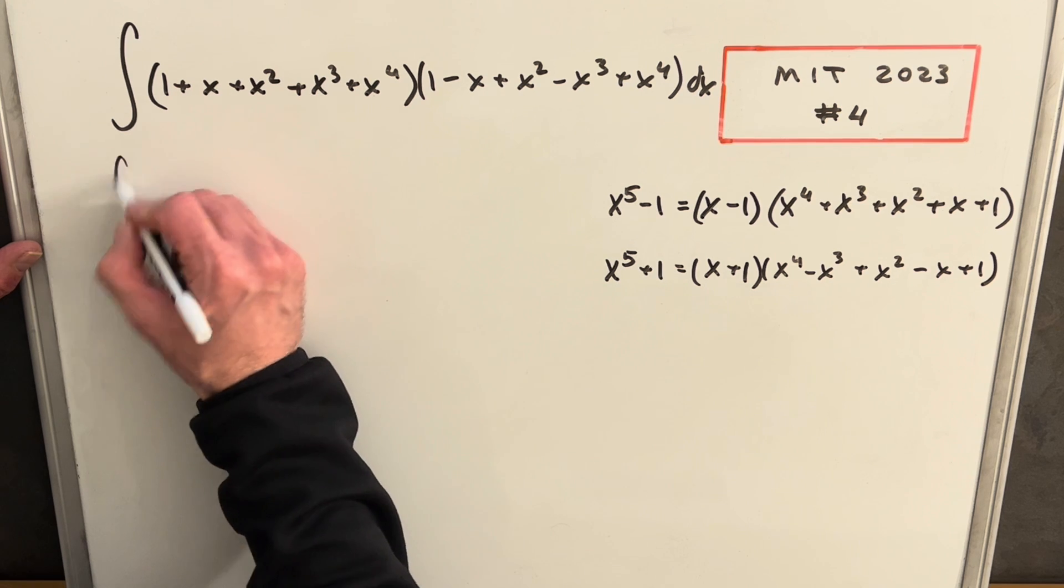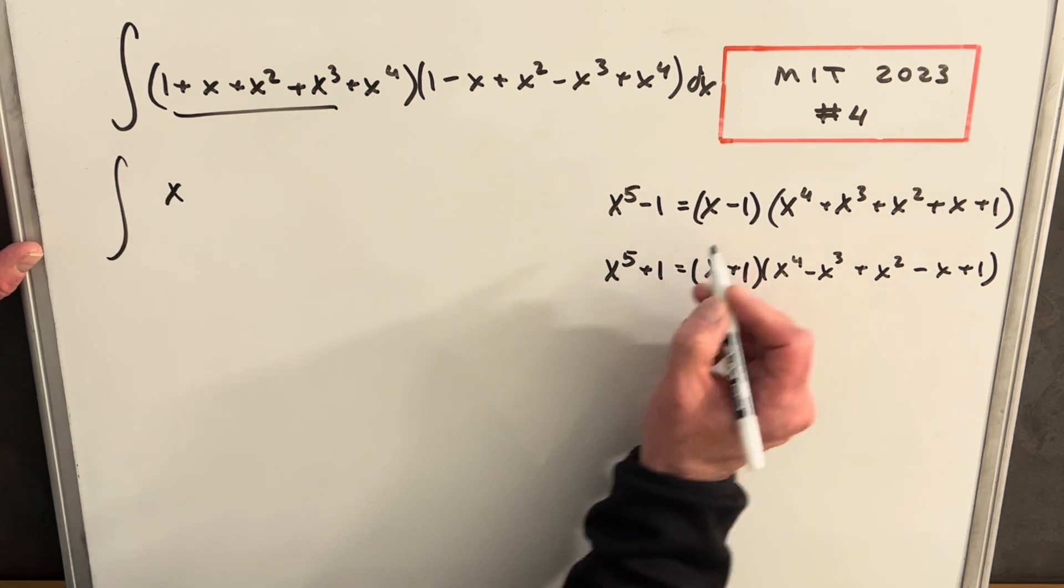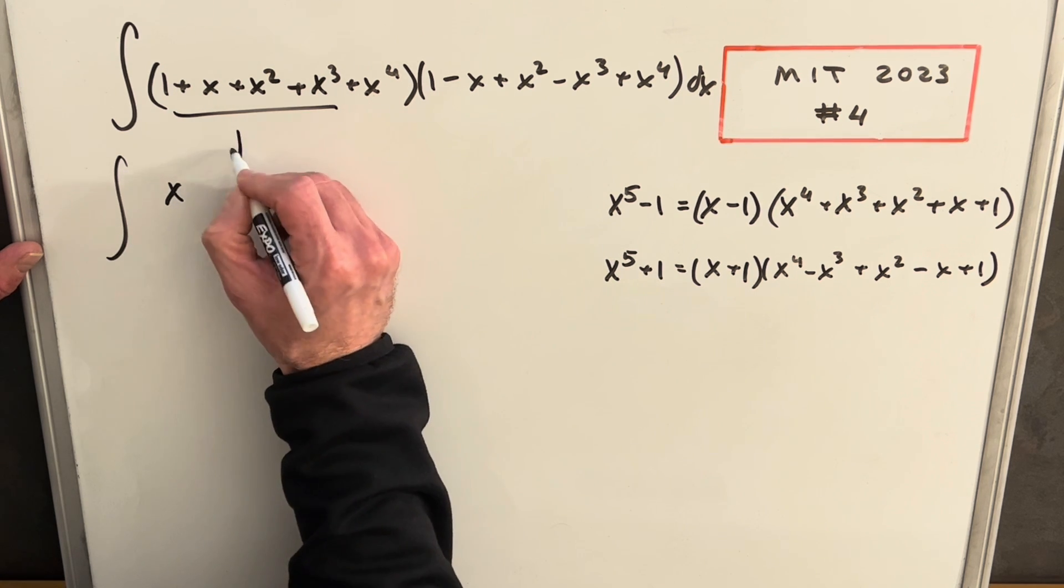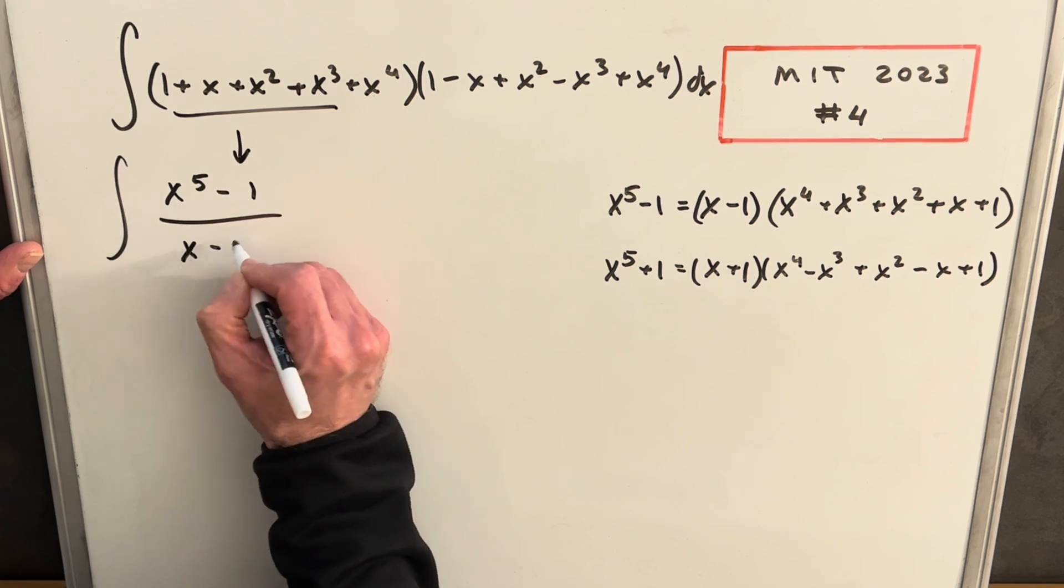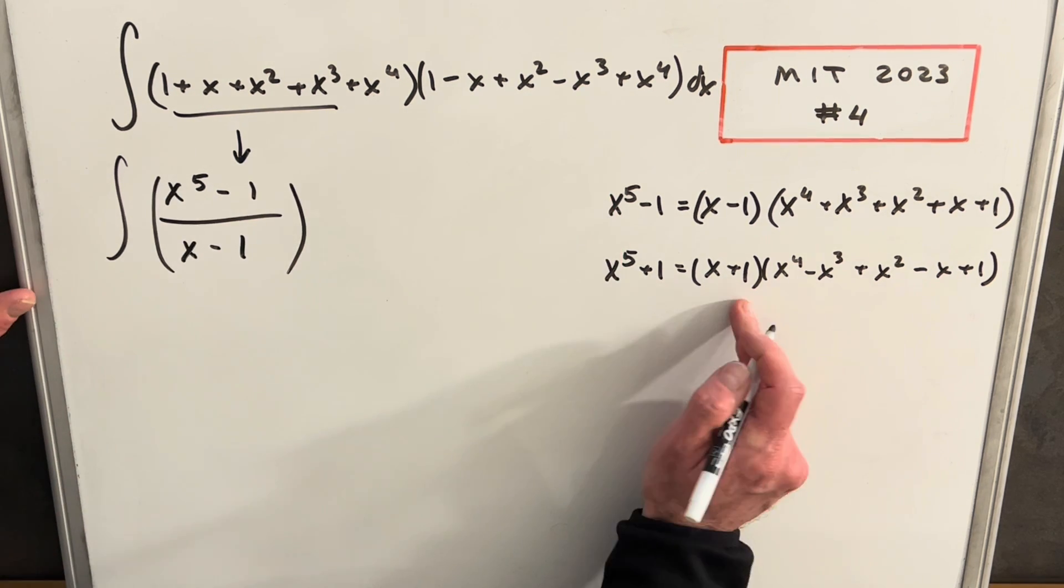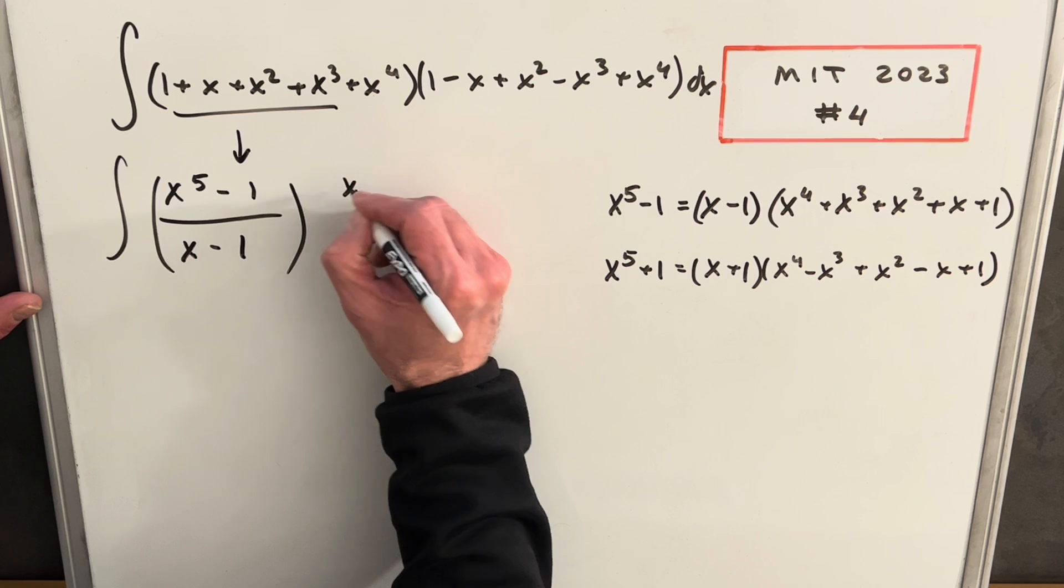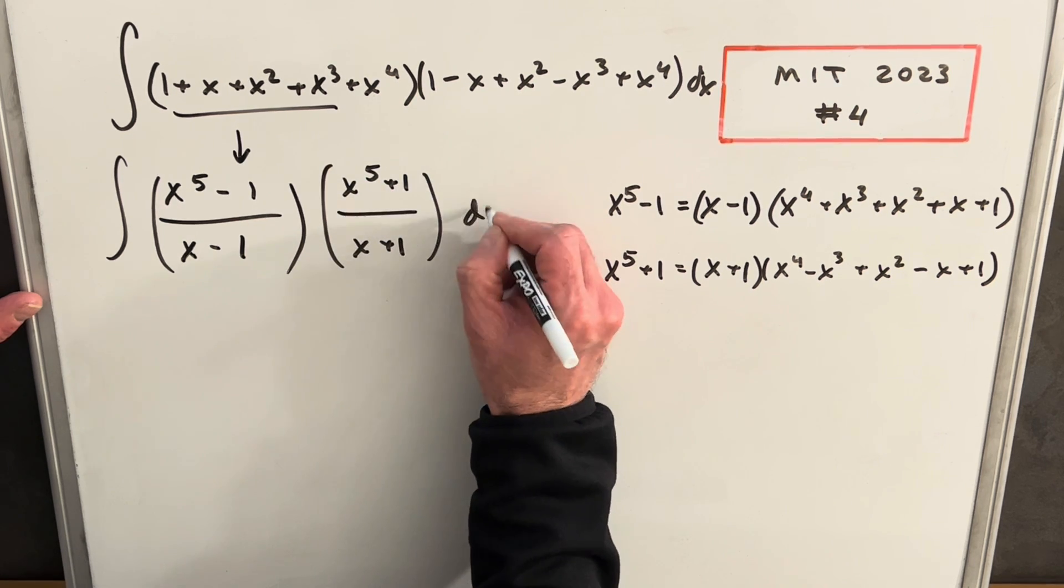So what this does for us is it'll allow us for this piece to write it—just dividing here by (x - 1)—we can write this first part as (x⁵ - 1)/(x - 1). And then for the second one, we'll do basically the same thing and divide by (x + 1), so we have (x⁵ + 1)/(x + 1) dx.